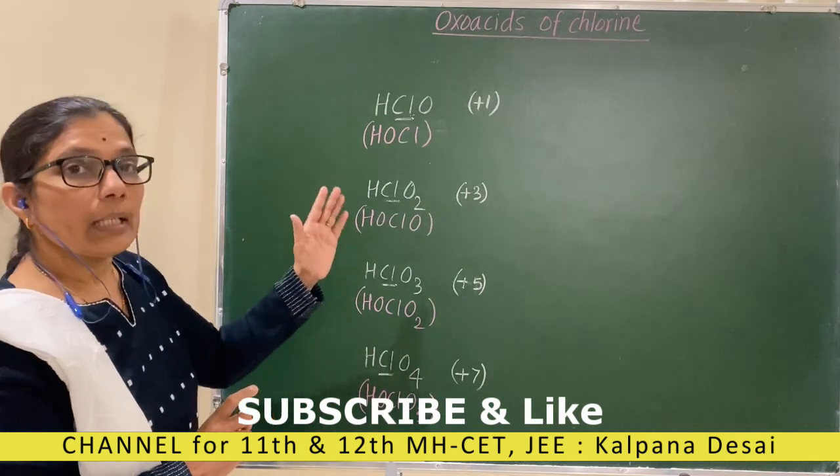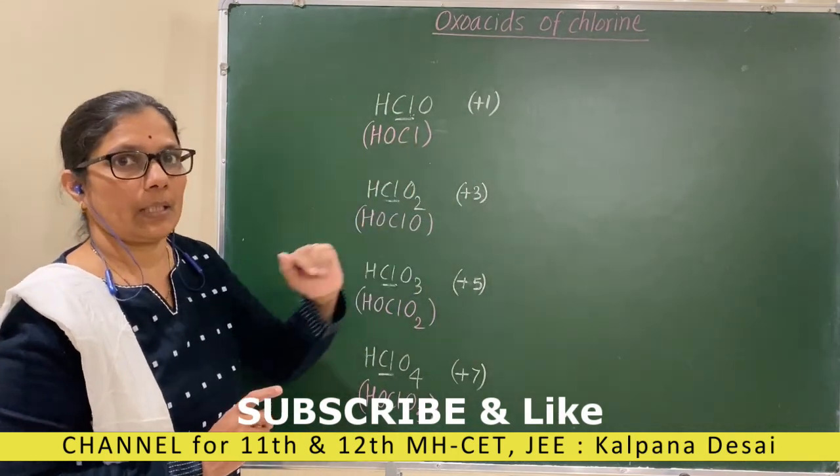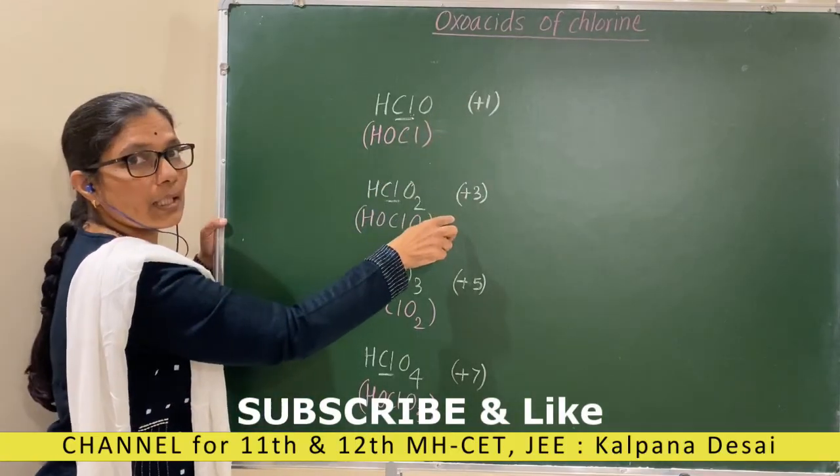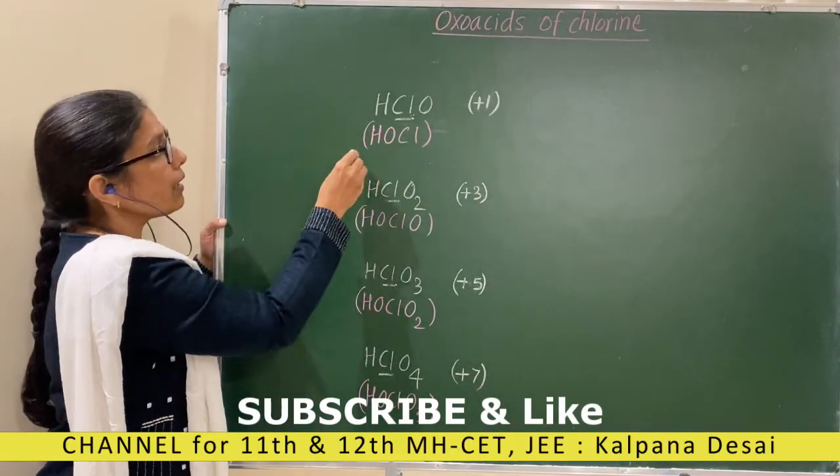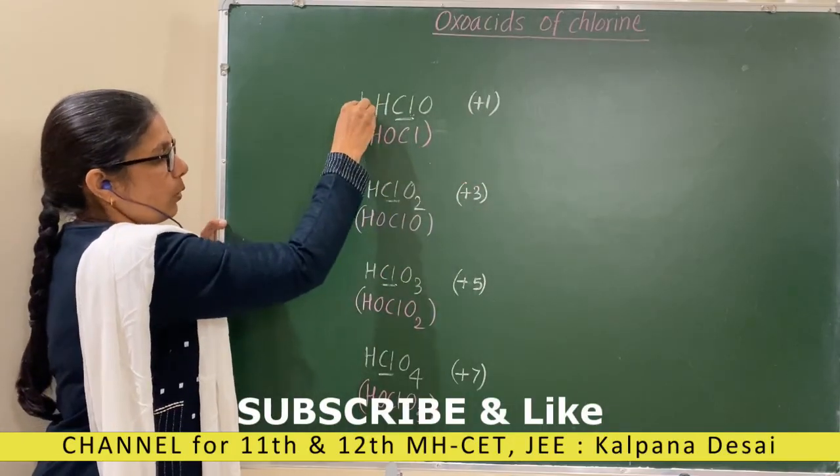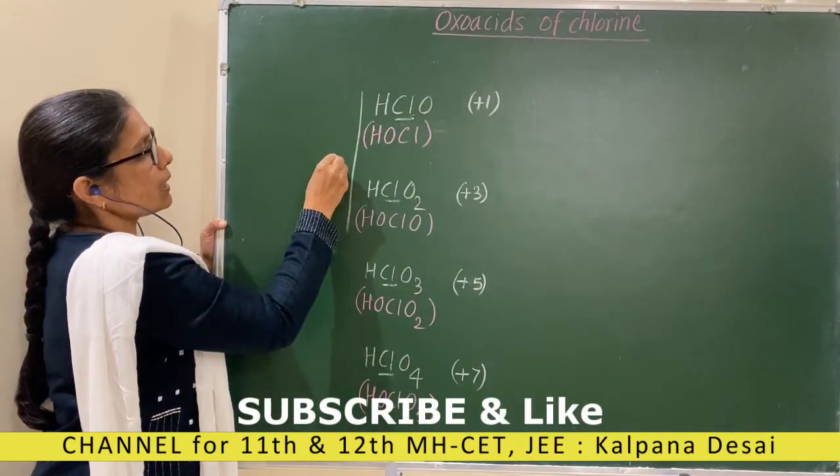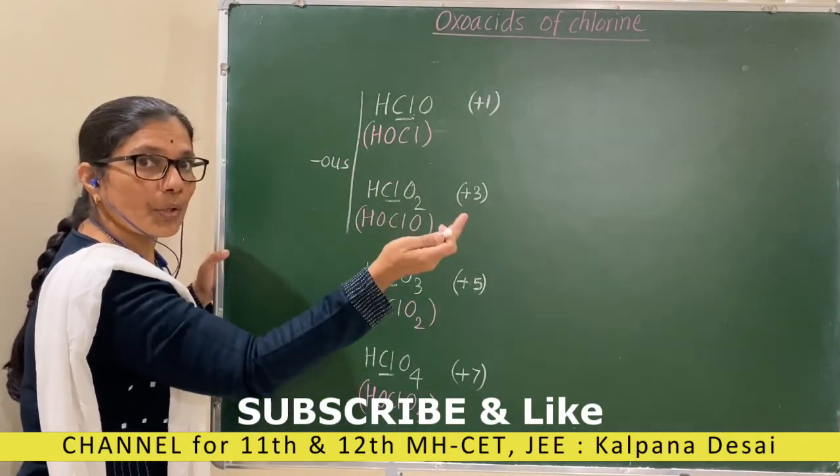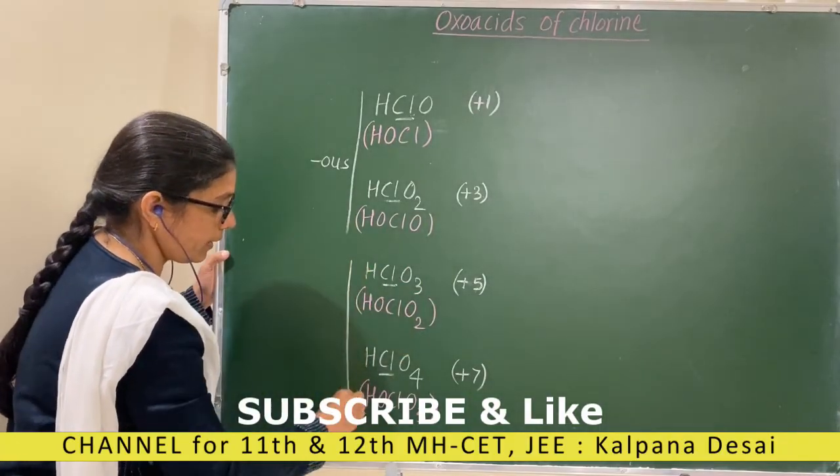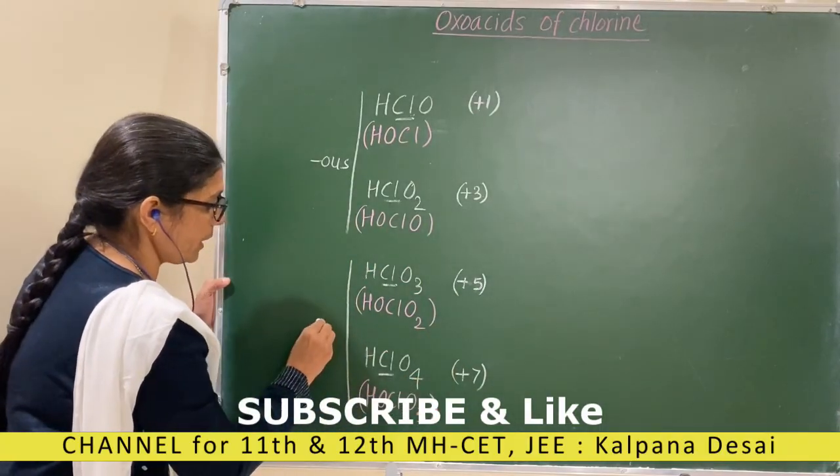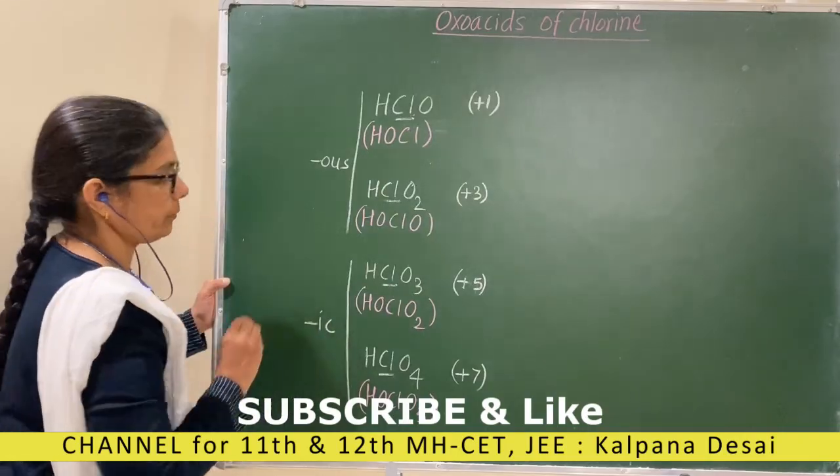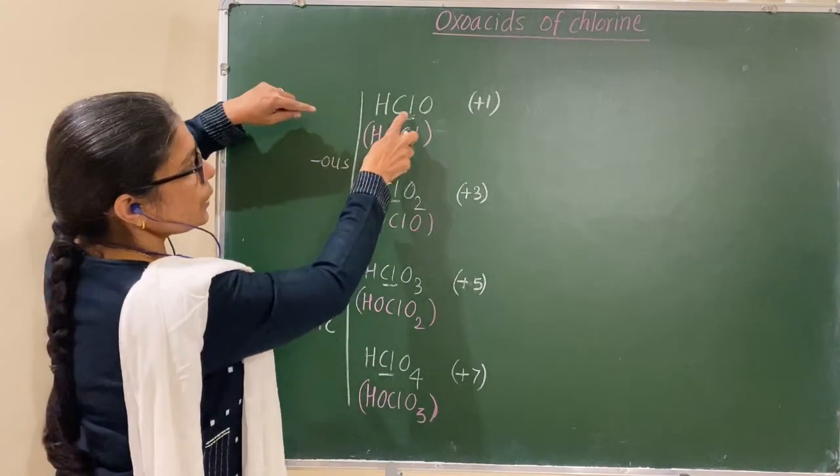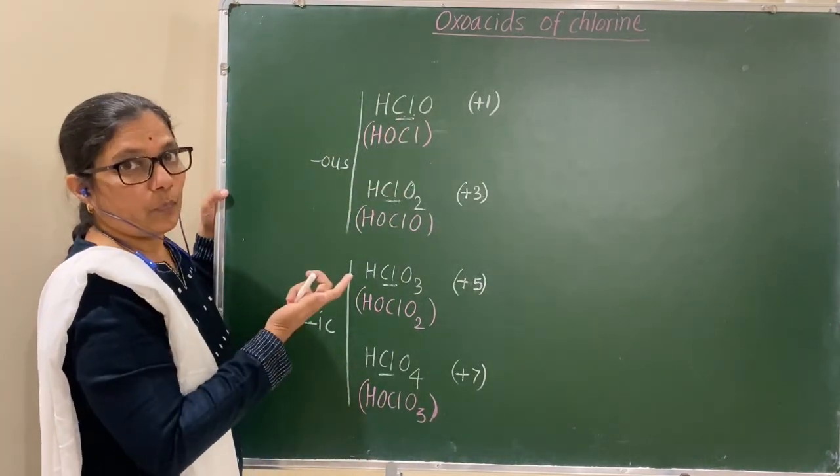Now let us see their names. Know that the lower oxidation numbers end with the word 'ous'. These two are lower, therefore use the suffix 'ous'. While the higher oxidation numbers end with the word 'ic'. These two are higher, so the suffix is 'ic'. Therefore, these two are chlorous.